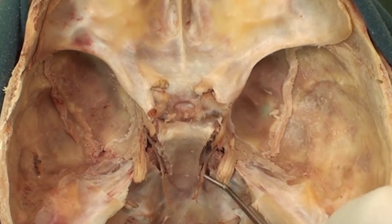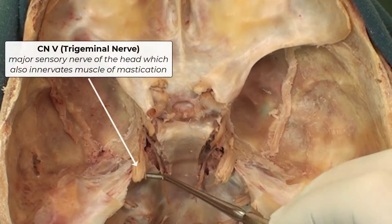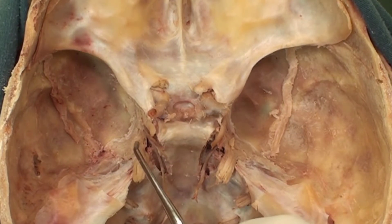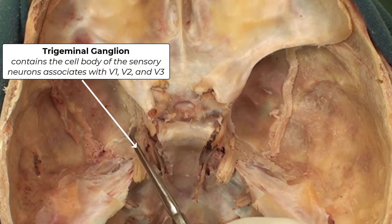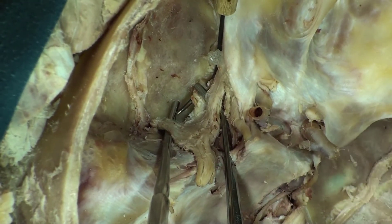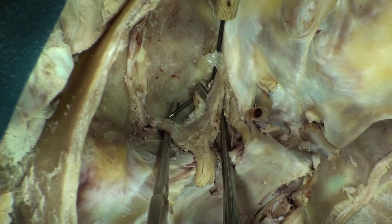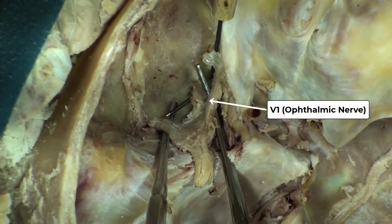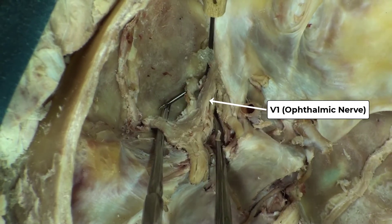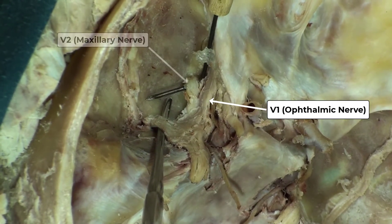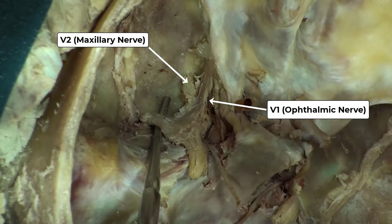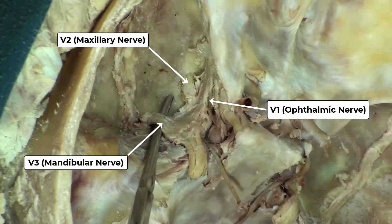Moving backward, here we have cranial nerve five — the trigeminal nerve — and going forward you can see the expansion which is the trigeminal ganglion. Now let's have a close-up of the branches of cranial nerve five. Starting with V1, the ophthalmic nerve; then V2, the maxillary nerve; and last but not least, V3, the mandibular nerve.